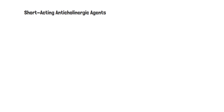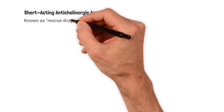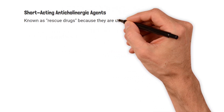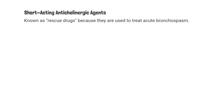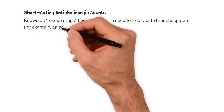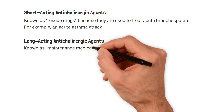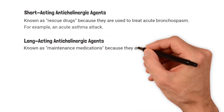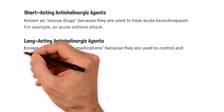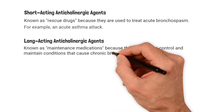Short-acting anticholinergic agents are known as rescue drugs because they are used to treat acute bronchospasm — for example, an acute asthma attack. Long-acting anticholinergic agents are known as maintenance medications because they are used to control and maintain conditions that cause chronic bronchospasm.